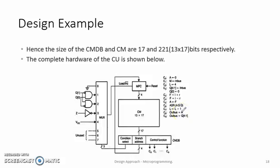Hence the size of the control memory data buffer and the control memory are 17 and 221 bits respectively. The complete hardware organization of the control unit is shown in the diagram. We find that there is a 13 by 17 control memory. The control word taken from this memory is 17 bits.